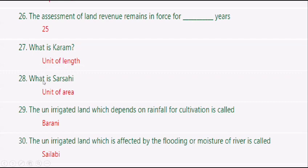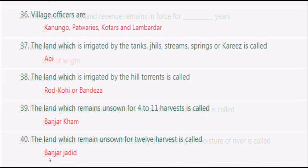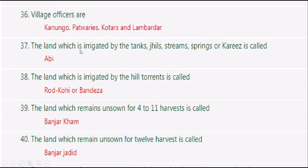The assessment of land revenue remains in force for 25 years. Karam is a unit of length. Sarsahi is a unit of area. The unirrigated land which depends on rainfall for cultivation is called Barani. The unirrigated land which is affected by the flooding or moisture of a river is called Selabi. Village officers are: Kanungo, Patwaris, Kotras, and Numberdars. The land which is irrigated by tanks, wells, streams, springs, or khariz is called Abhi.